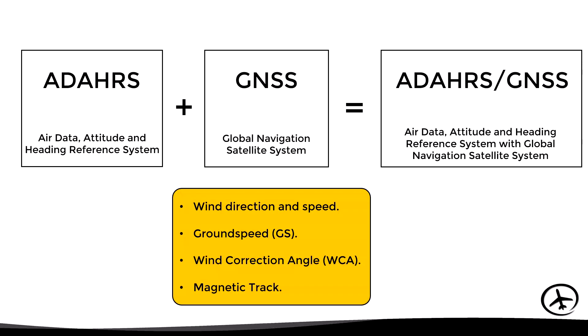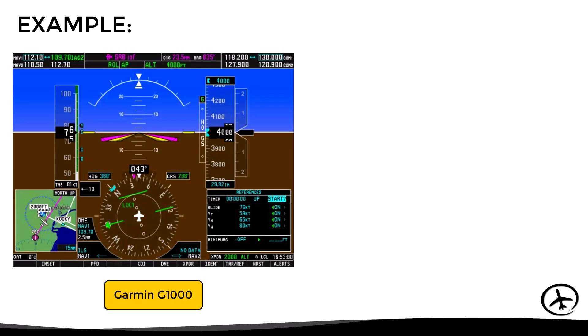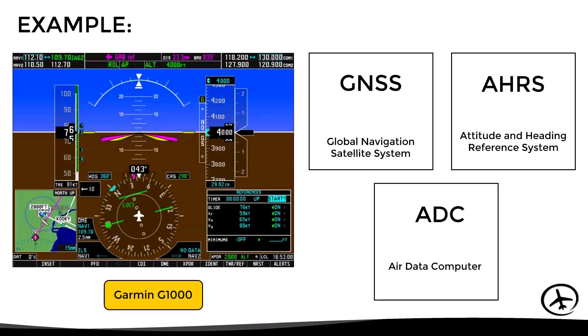An example of this type of unit is the Garmin G1000, which, although it does not combine the units physically, does use the information derived from each one to calculate all the parameters.